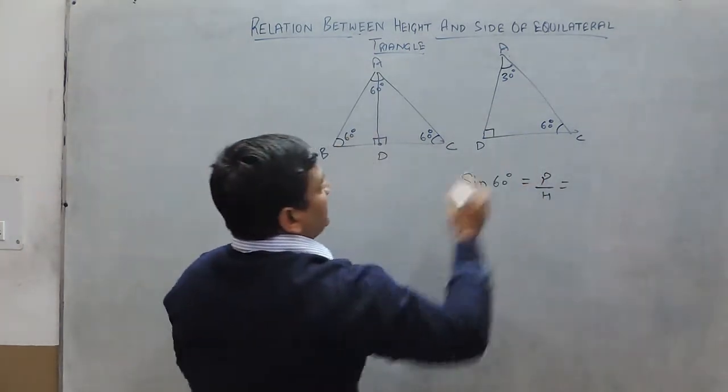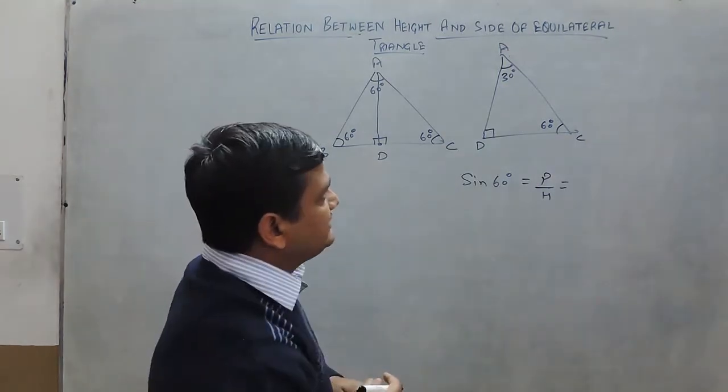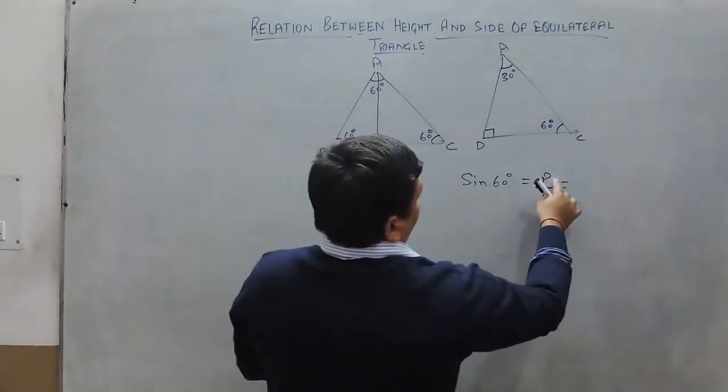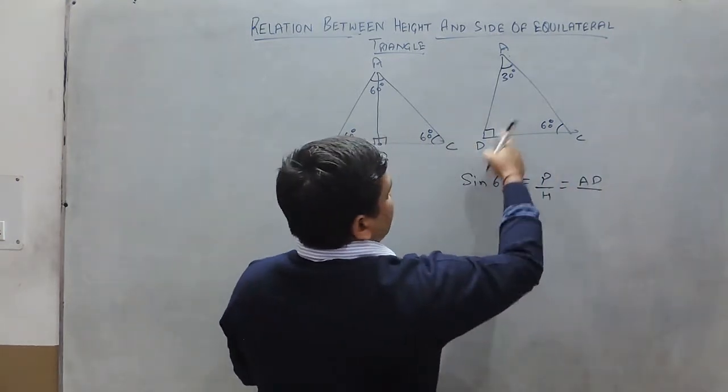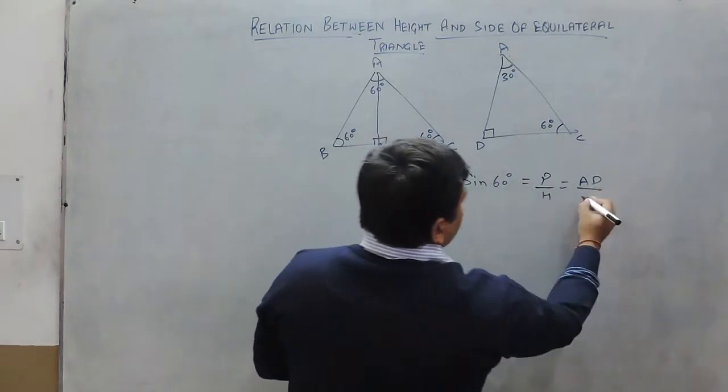Here in this triangle, that is right angle triangle ADC, perpendicular is AD, and hypotenuse is the side opposite to right angle, that is AC.